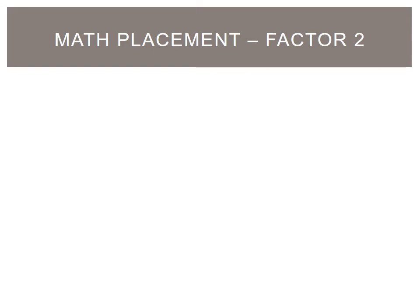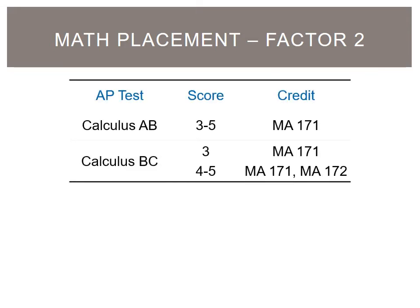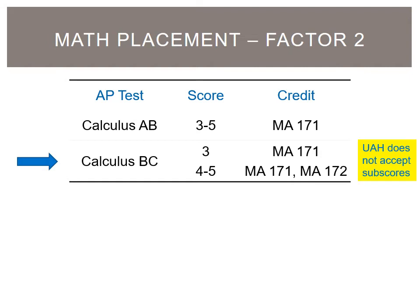If you are taking or have taken AP Calculus, you will need the following scores to earn credit and place into higher math courses. For the Calculus AB exam, you need to earn a minimum score of 3 and you will receive credit for Calculus A and be placed into Calculus B for your first semester. If you take the Calculus BC exam and earn a score of 3, you will receive credit for Calculus A and be placed into Calculus B. If you earn a 4 or 5 on the BC exam, you will receive credit for Calculus A and B and be placed into Calculus C for your first semester. Please note that UAH does not accept AP subscores.